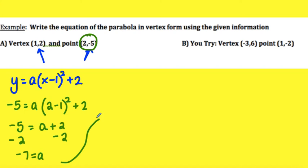So now I rewrite my equation. My final equation of the parabola is y equals negative 7 times x minus 1 squared plus 2. Along with that other one, I want you to try b.